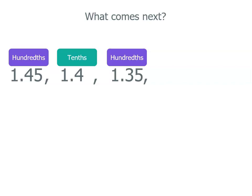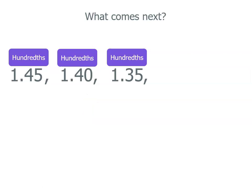When we're working out patterns, we don't really want to deal with tenths and hundredths mixed. So what we can do is rename 1 and 4 tenths to 1 and 40 hundredths, because it's the same thing. A good way to remember this: if you put a 0 on the far right after your decimal point, you don't change the value of the number. So now we've got all of our decimals in hundredths.